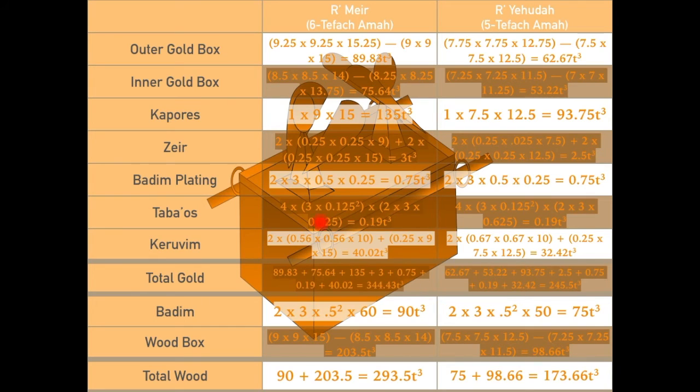These poles, of course, were plated in gold. Once again, both Rabbi Meir and Rabbi Yehuda agreed that it was 0.75 cubic tefachim in volume between the two poles.